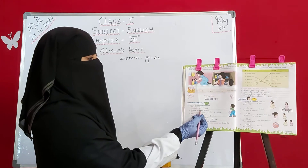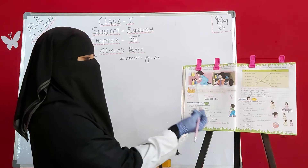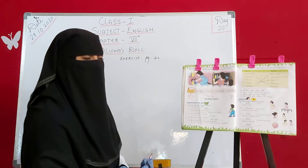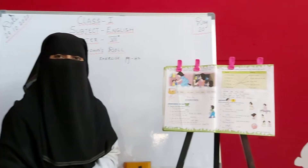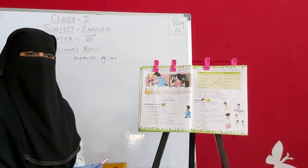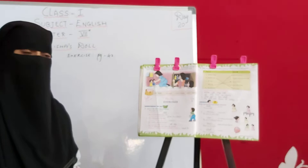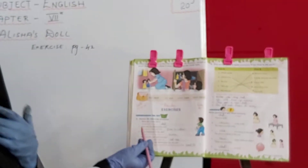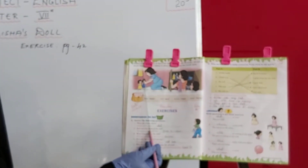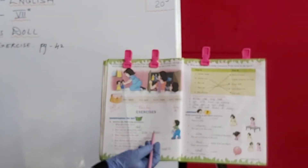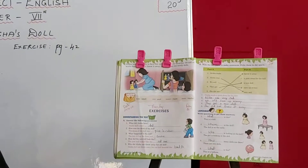Then how was the dress of the doll? Doll ka dress kaisa tha? Alicia ke doll ka dress? It was pink in colour. So the dress of the doll was pink in colour.